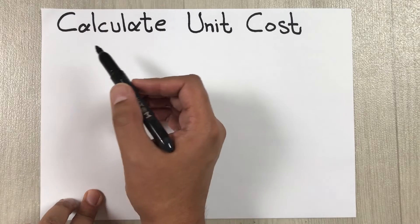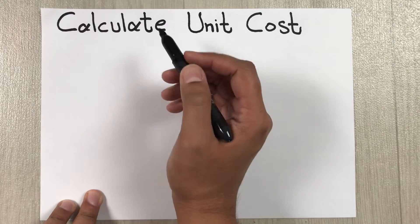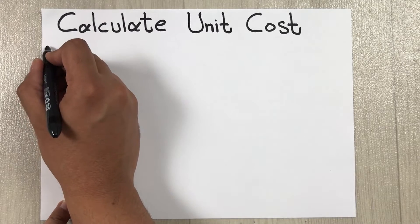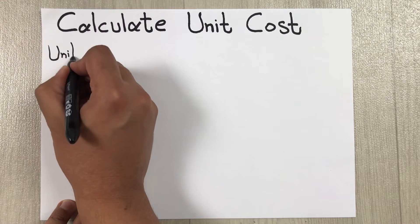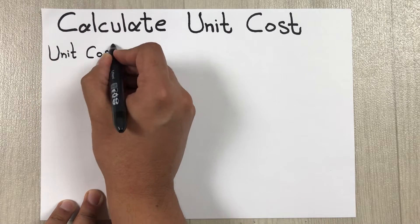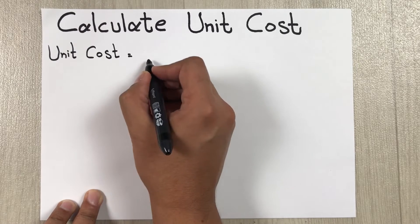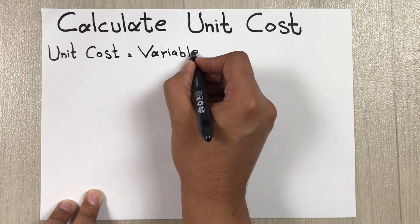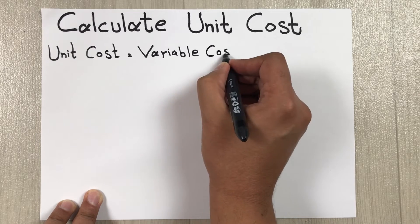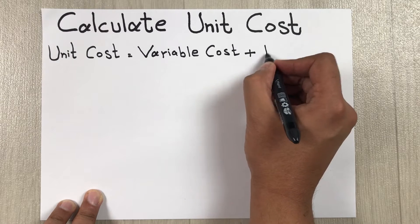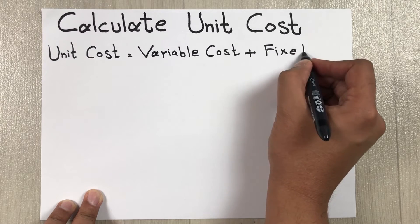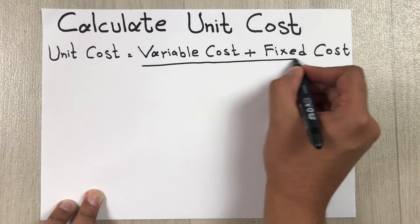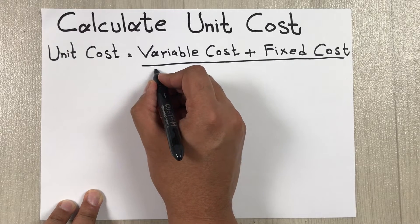Hello guys, I hope you are doing really well. In today's video I am going to show you how to calculate unit cost. The formula for unit cost is: unit cost is equal to variable cost plus fixed cost, divided by total units produced.